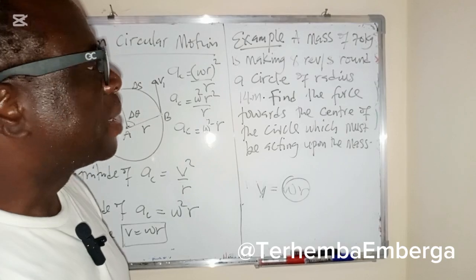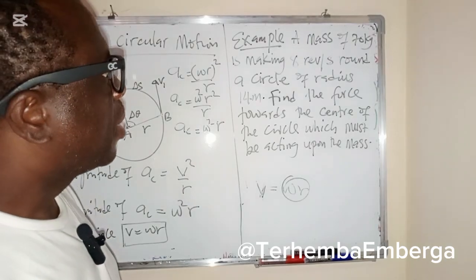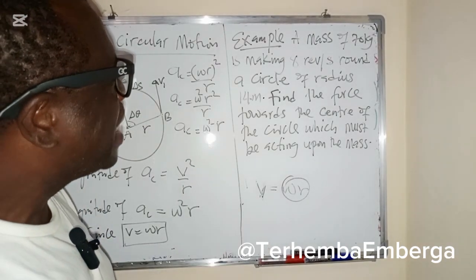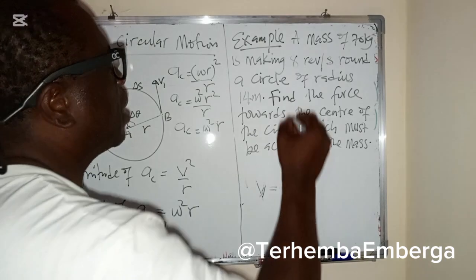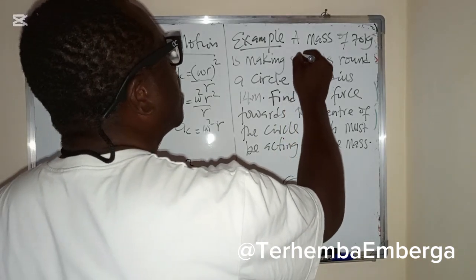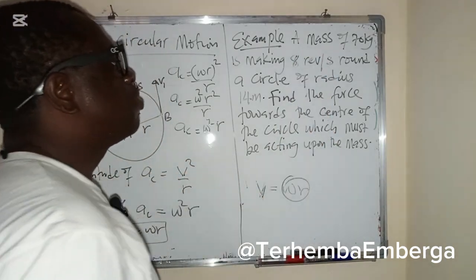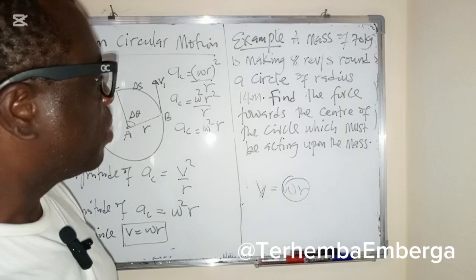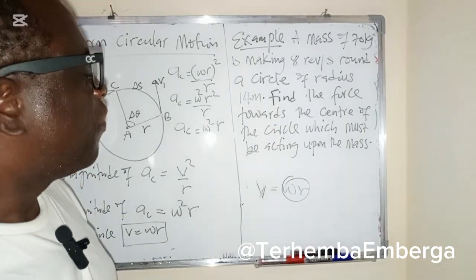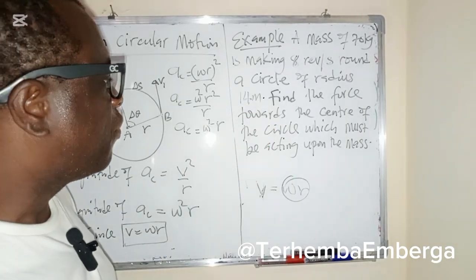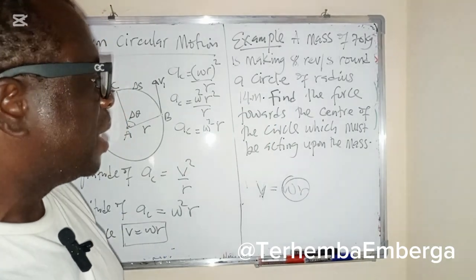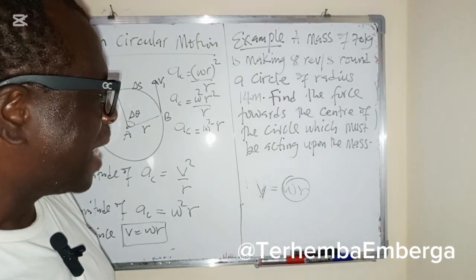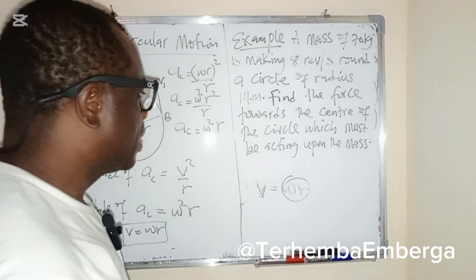A mass of 70 kg is making 8 revolutions per second, round a circle of radius 14 meters. Find the force towards the center of the circle which must be acting upon the mass.